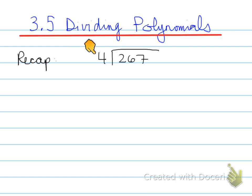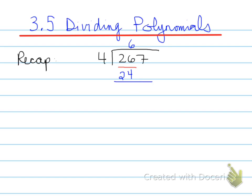4 goes into 2 zero times, but 4 goes into 26 a total of 6 times. 4 times 6 is 24, and we subtract that, giving us 2. Bring down the 7, and 4 goes into 27 six times again. We subtract 24, and we have a remainder of 3.